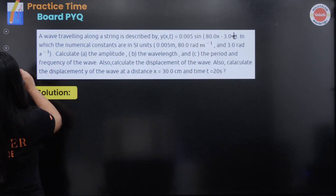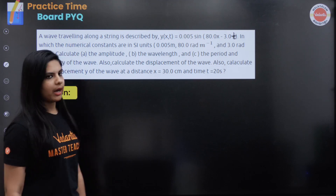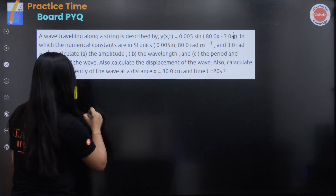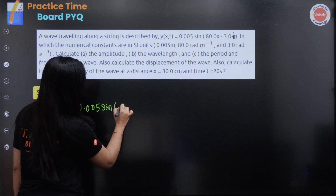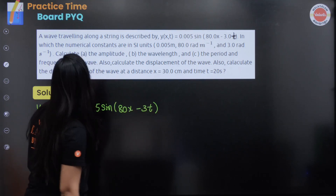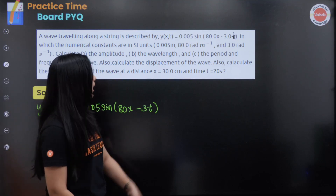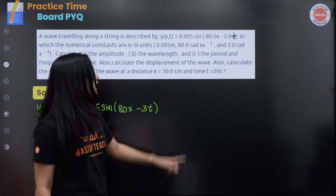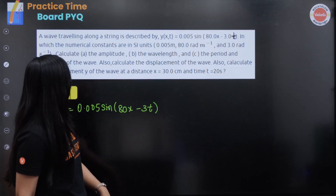A wave traveling along a string is described by y(x,t) = 0.005 sin(80x - 3t), where the numerical constants are in SI units: 0.005 meter, 80 radian per meter, and 3 radian per second.